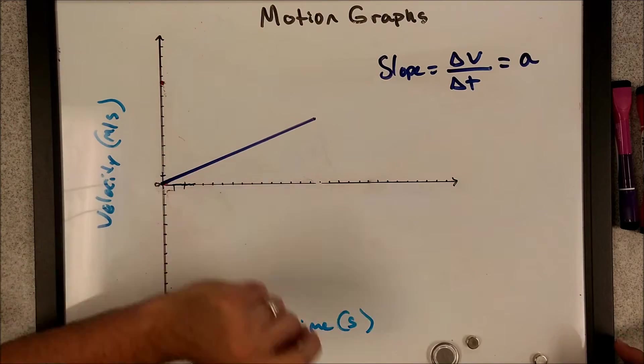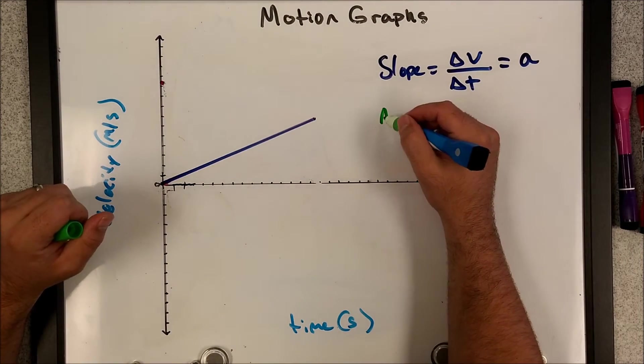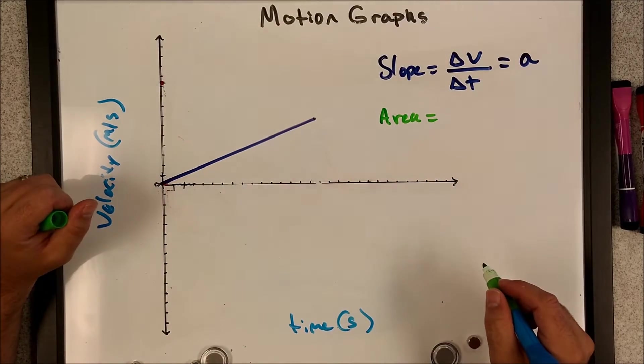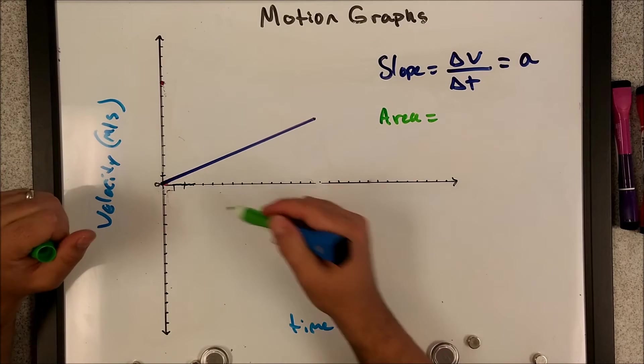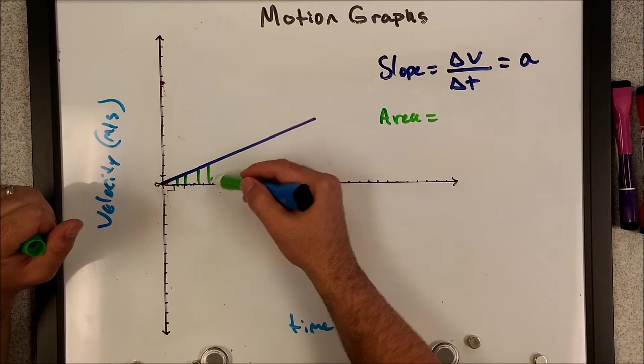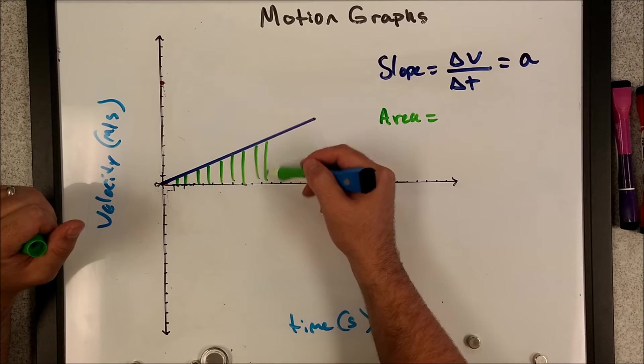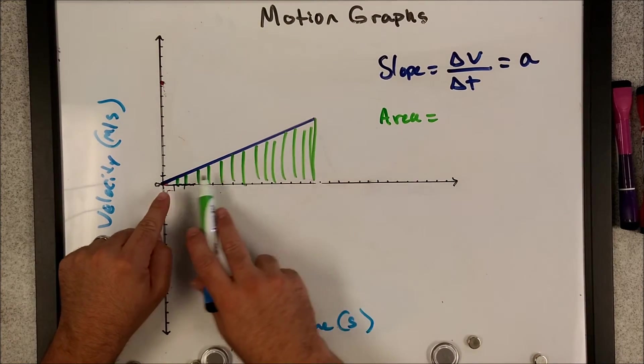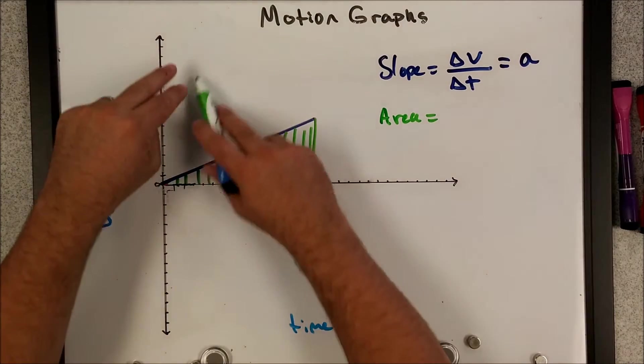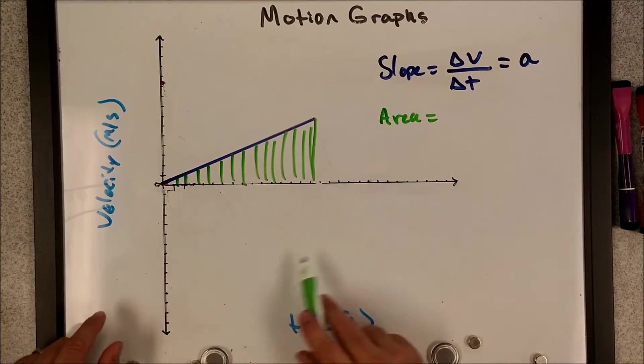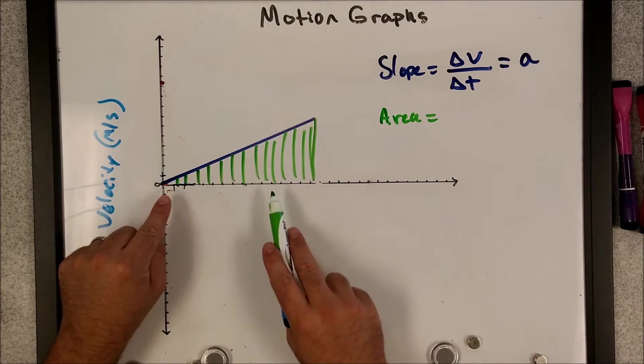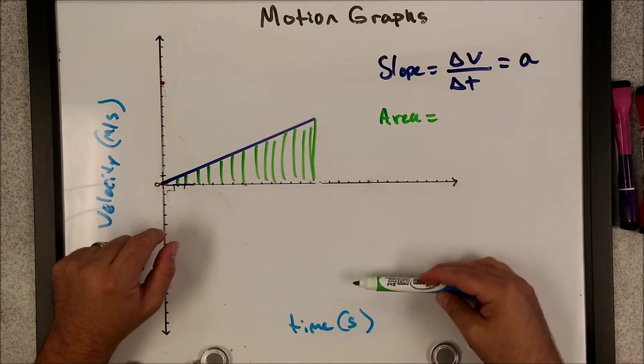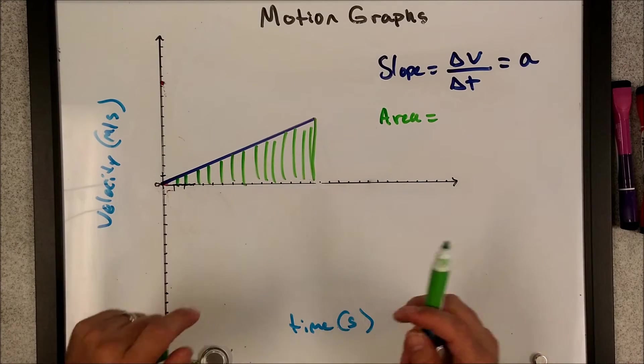We didn't discuss the area of a displacement time graph too much because it doesn't really mean much in terms of physics. But velocity time graph, it does. So the area under this slope means something. And so every time you take the area, you always take the area underneath the slope itself. So I'm talking about this whole region here.